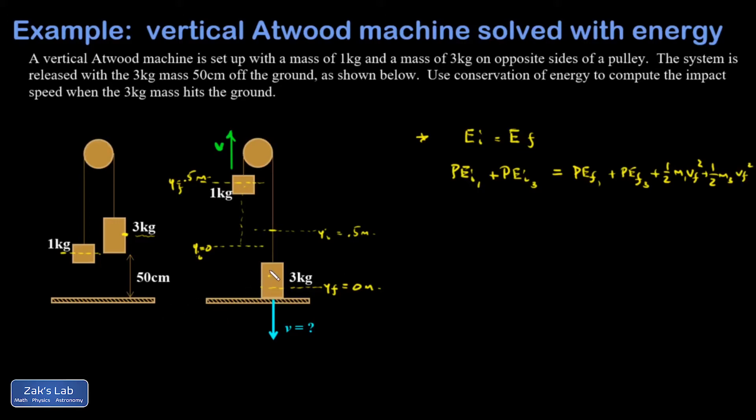All right, and then the way I've set up my coordinate system for potential energy on each of these, my final Y coordinate is zero for the three kilogram mass. So its potential energy, Mgy, is going to be zero. But my final potential energy for the one kilogram mass, well, it has a Y coordinate of 0.5, so I'm going to have to write in that term. My initial potential energy for the one kilogram mass was zero. But my initial for the three kilogram was not zero. It had a Y coordinate at a 0.5.